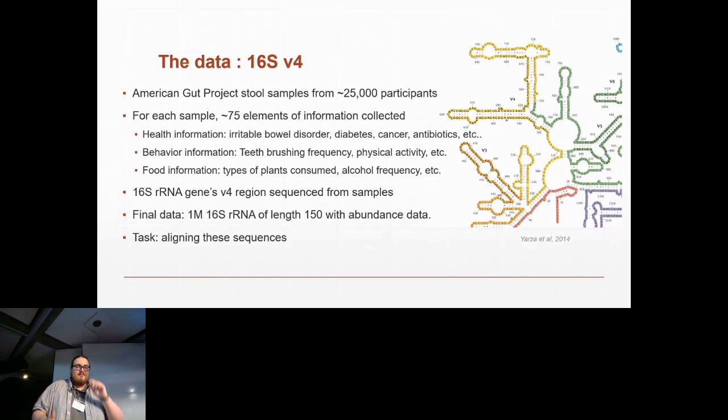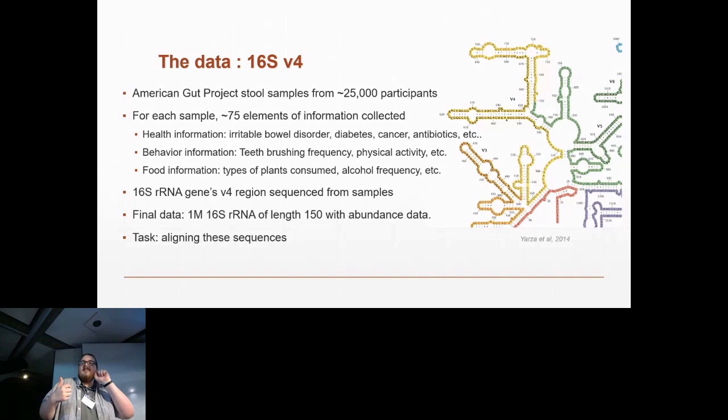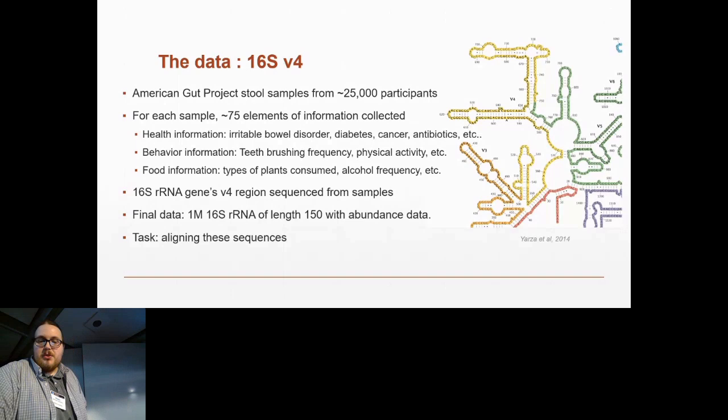We have some behavior information like how often they brush their teeth or exercise, and we have food and alcohol information. So we know a lot of things about the people who donated these samples that we sequenced genomic sequences from. More precisely, the data we have is the first 150 nucleotides of the V4 region of the 16S ribosomal RNA.